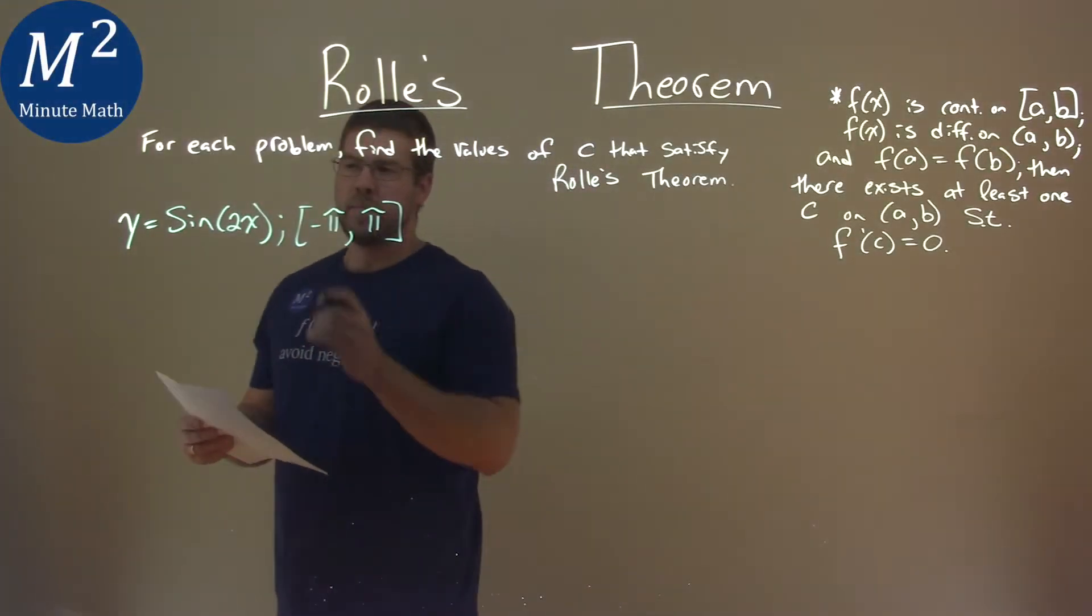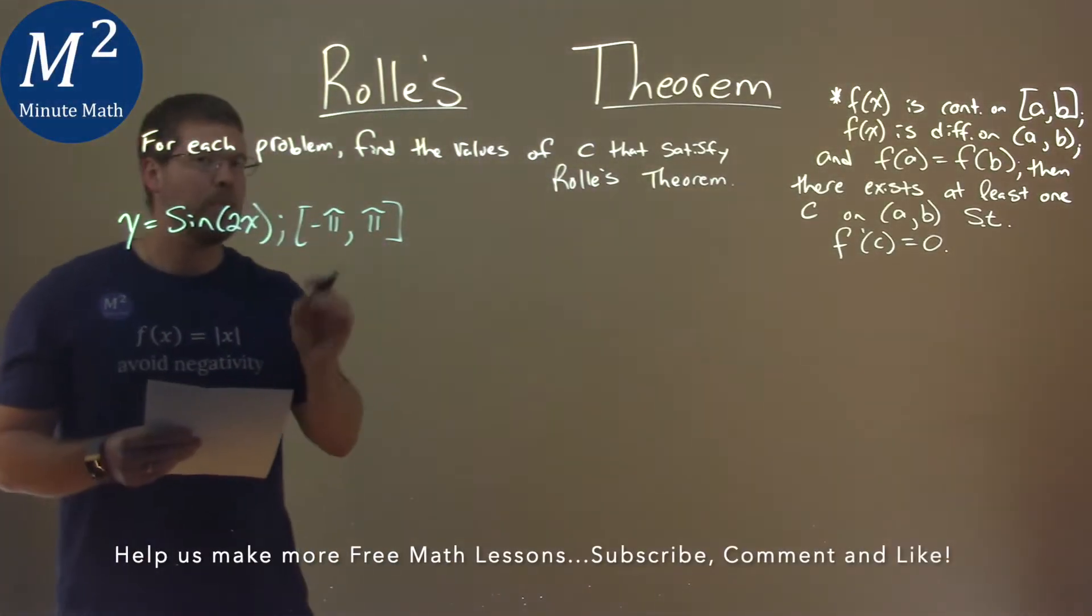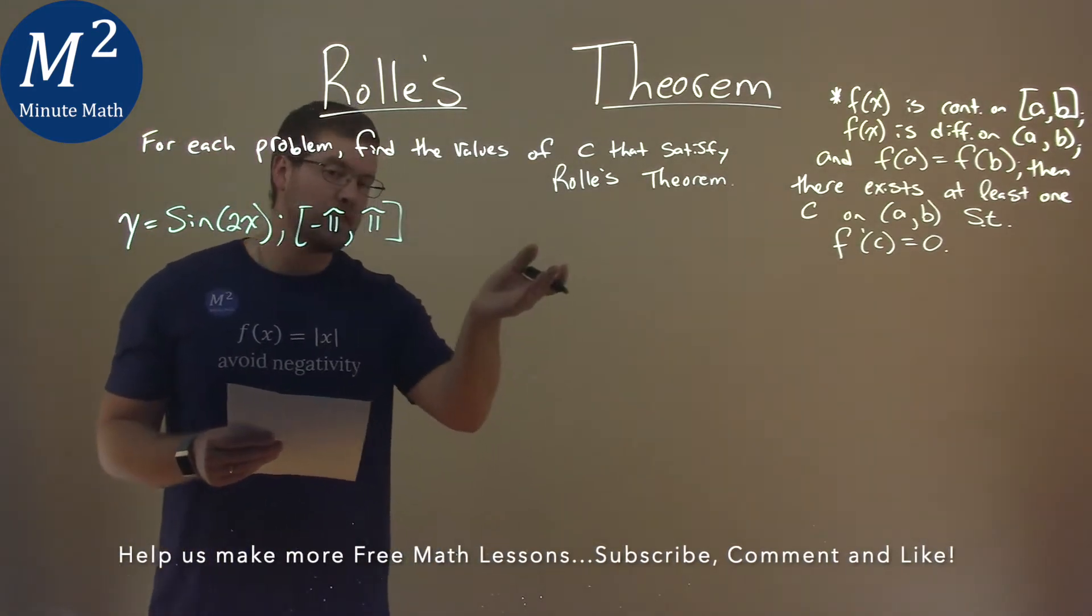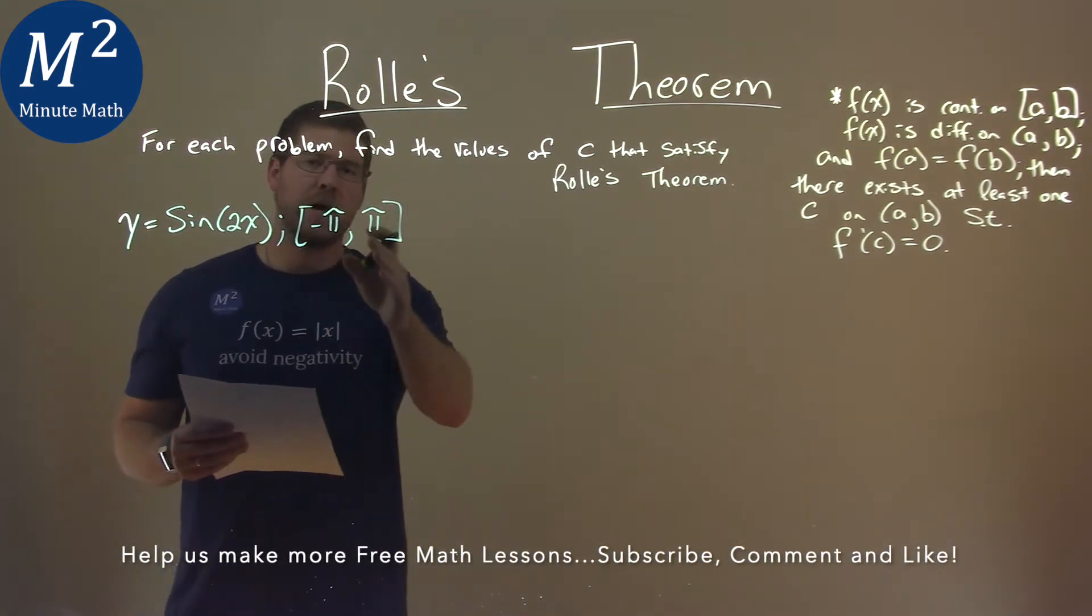I'm given this problem right here. y equals sine of 2x, and we need to find the values of c that satisfy Rolle's Theorem on our interval from negative pi to pi.